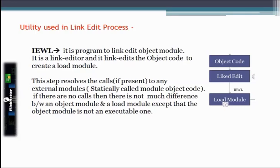After compilation we have the object code. That object code goes through the Link-Edit process to create a Load Module. At this stage we use the IEWL utility. It is the linked editor and link-edits the object code to create a Load Module. This step resolves any calls to external modules — i.e., statically called object code. If there is no such call, there is not much difference between the object module and load module except that the load module is executable.